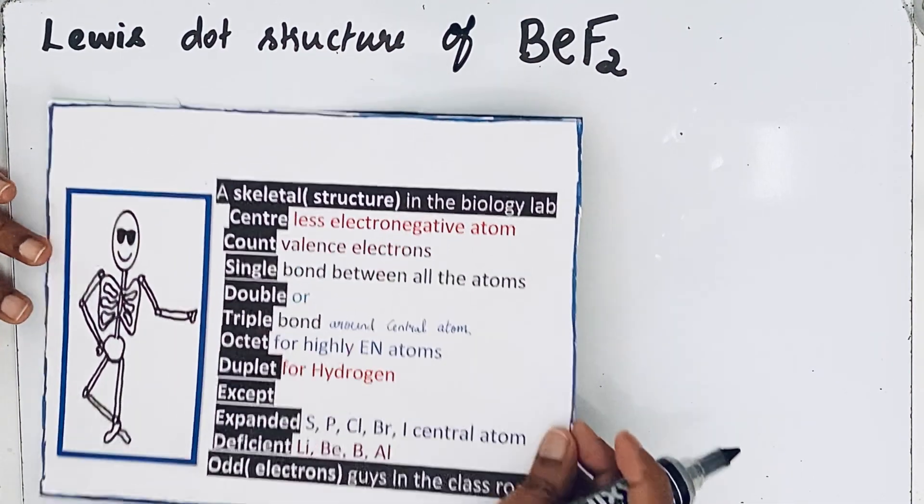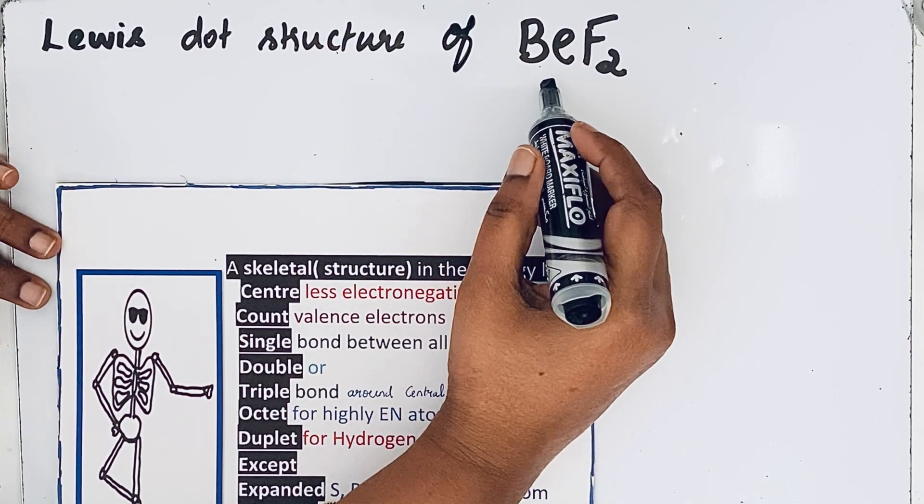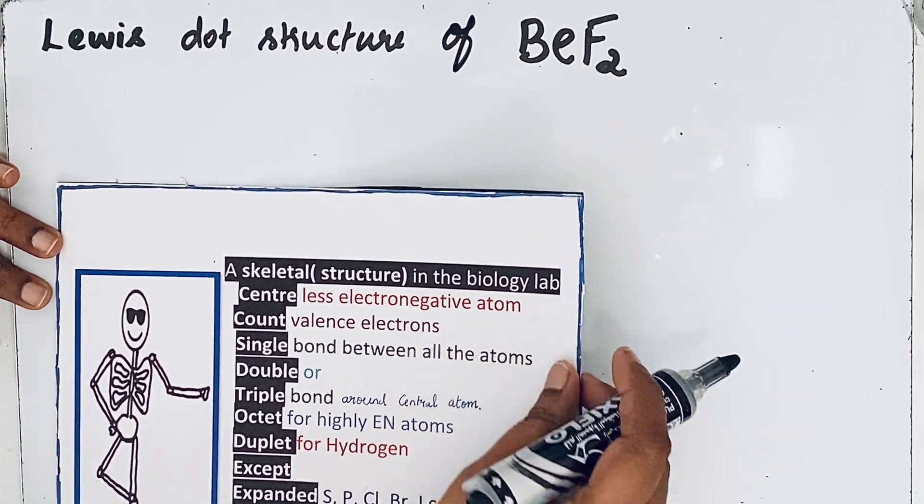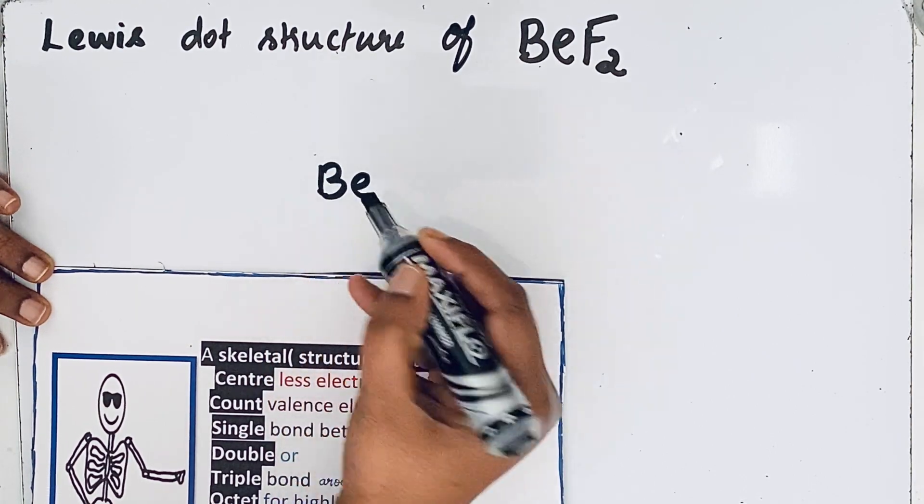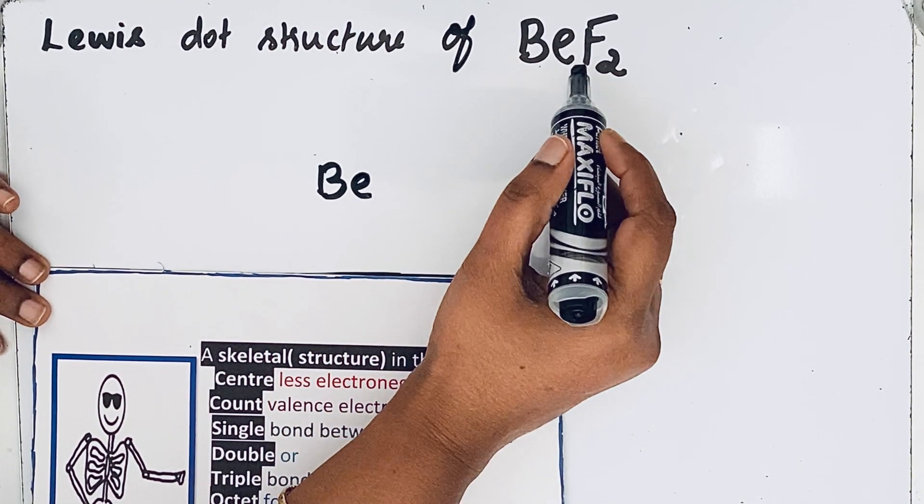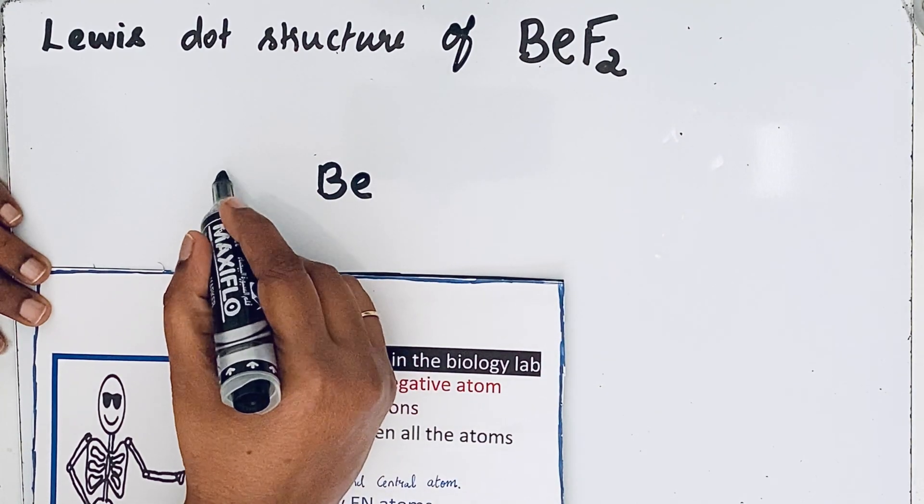In beryllium fluoride, beryllium is less electronegative compared to fluorine, so we could write that beryllium in the center and that fluorine we go to write just around it.